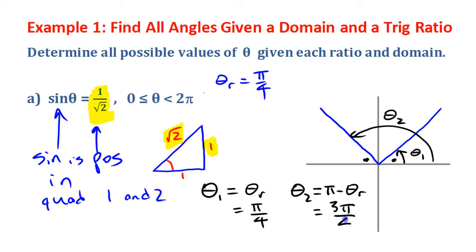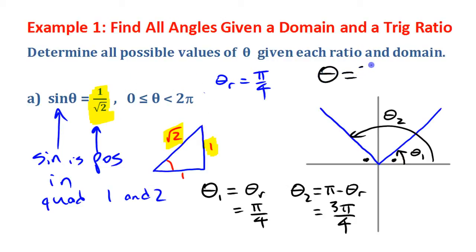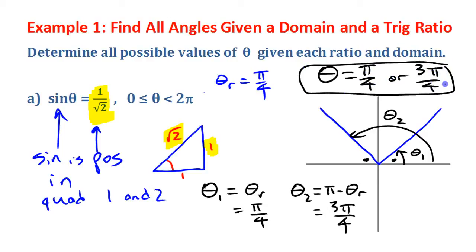So there are actually two angles that meet this criteria — two angles that have a sine of 1 over root 2 within one full turn. Theta could be π/4 or 3π/4.